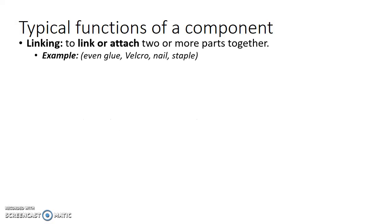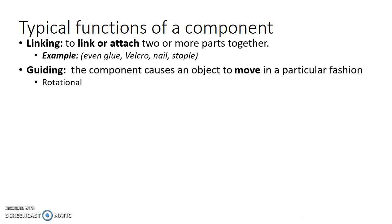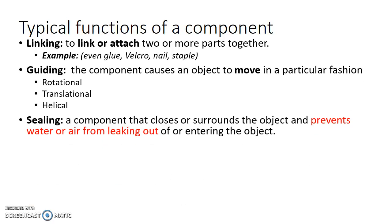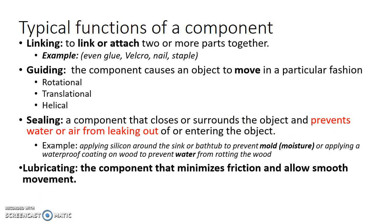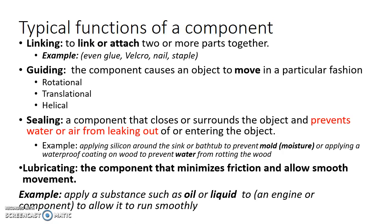Typical functions of a component include links, guiding controls — rotational, translational, and helical — sealing, which is a component that closes or surrounds an object to prevent water or air from leaking out, and lubricating, which is a component that minimizes friction and allows smooth movement. For example, oil is applied inside a car engine so that nothing is damaged by friction.